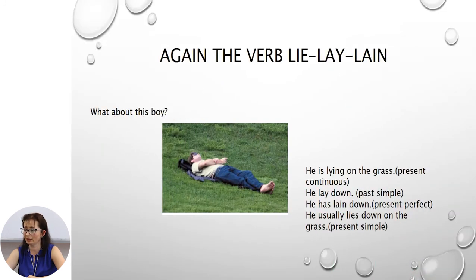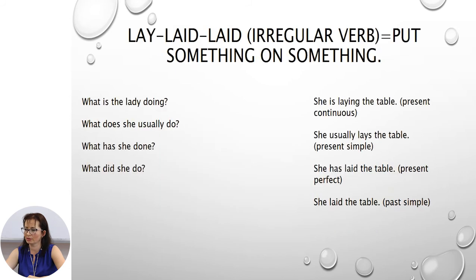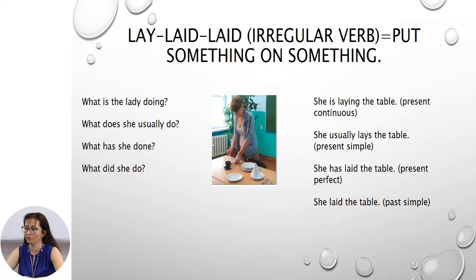The verb 'lie' (to recline) is an irregular verb and you should remember the past forms. This boy is lying on the grass — present continuous; he lay down — past simple; he has lain down — present perfect; he usually lies down on the grass — present simple. The last verb: lay, laid, laid — a regular verb meaning to put something on something. Be careful, it takes an object. The lady is laying the table — present continuous; she usually lays the table — present simple; she has laid the table — present perfect; she laid the table — past simple.